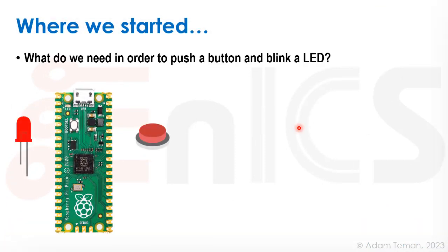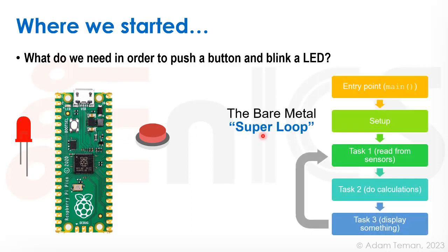Let's remember where we started this whole course. We wanted to ask what we need in order to push a button and blink an LED. So we have some sort of a microcontroller — a Raspberry Pi in this case — we have a button, and we have an LED. We talked about bare metal, and a bare metal super loop had something like this: an entry point, a main, and some sort of setup to tell us where the addresses for the LED and button are.